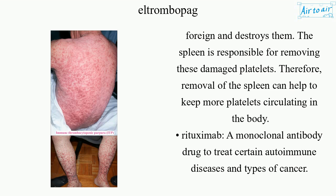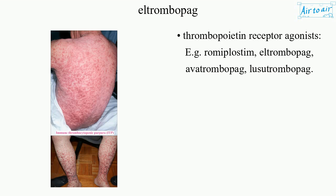Rituximab, a monoclonal antibody drug used to treat certain autoimmune diseases and types of cancer, is also used. Thrombopoietin receptor agonists include romiplostim, eltrombopag, avatrombopag, and lusutrombopag.